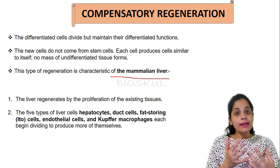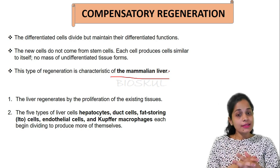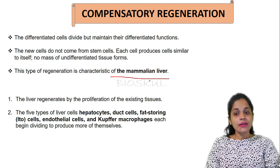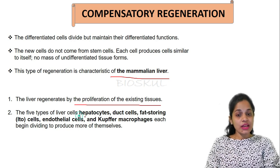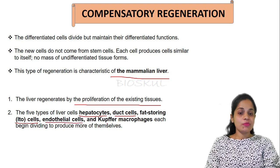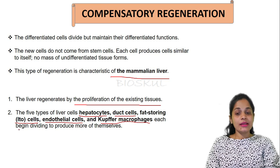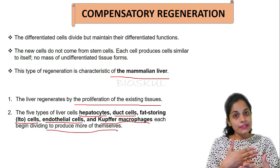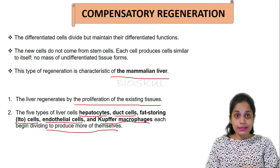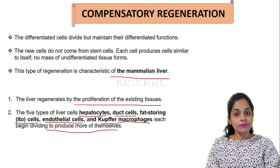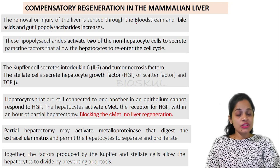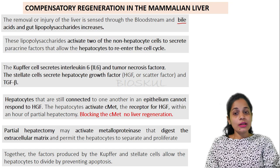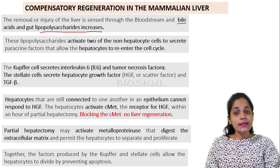Compensatory regeneration, as its name indicates, is where some cells proliferate and compensate for other lost parts. This type of regeneration is seen in the mammalian liver. The liver regenerates by proliferation of existing tissues. There are five types of liver cells: hepatocytes, duct cells, fat-storing cells (also known as Ito cells), endothelial cells, and Kupffer macrophages. Each begins dividing to produce more of themselves and compensates for the lost part.